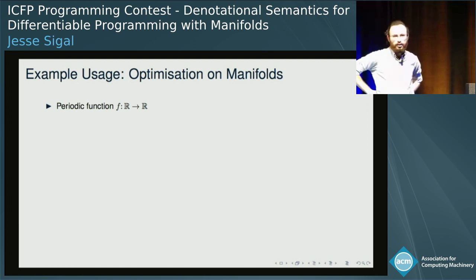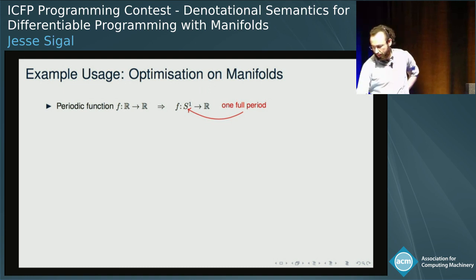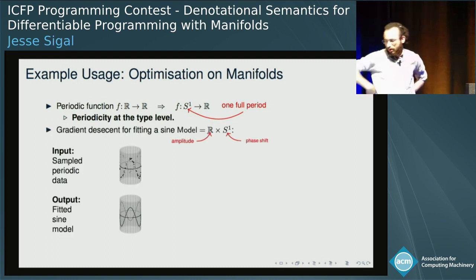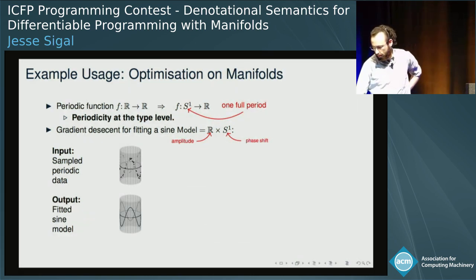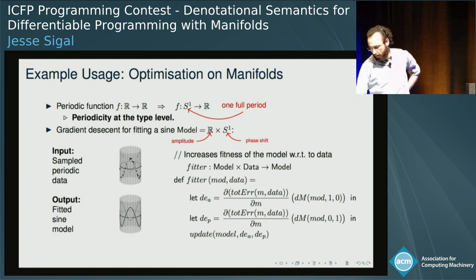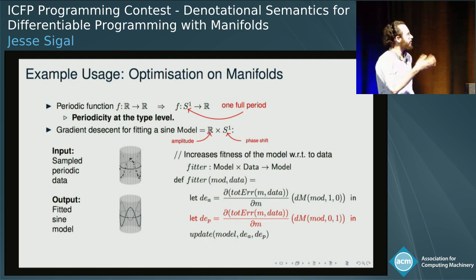Suppose we have a periodic function from R to R. A much better type for that is from the circle to the reals, where once around the circle represents a full period of the periodic function — so we've achieved periodicity at the type level. For gradient descent, the input will be sampled periodic data, which can naturally be graphed on a cylinder, and the output will be a fitted sine model where we fit to the amplitude and phase. The main component is a function fitter where we differentiate the total error between the model and the data with respect to the model — first for the amplitude and next for the phase shift. The syntax for each is the same, even though one is a real number and one is an element of the circle.